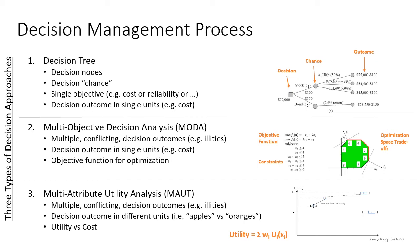The handbook starts with the decision tree, a process where you identify the decisions that have to be made, the role of chance associated with those decisions, and the outcomes. Decision trees are very useful when you have a single objective and the decision outcome can be measured in the same units. A typical way of measuring the decision is in terms of dollars or cost, and this approach works well when your decision involves a single objective measured entirely in consistent units.